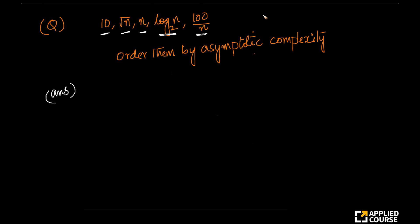If you think of them, each of them are functions of n. Of course, this is a constant — f of n equals 10. The question here is: order them by asymptotic complexity, in increasing order of asymptotic complexity.